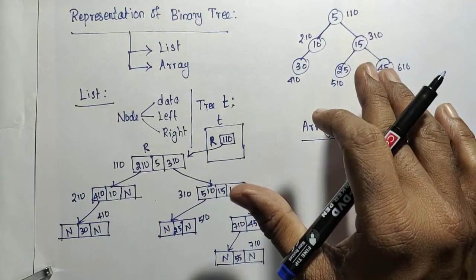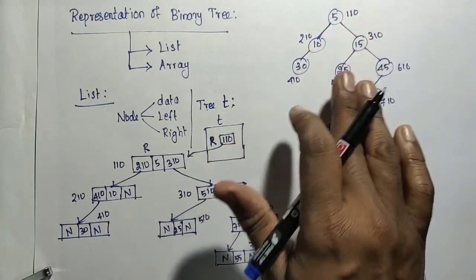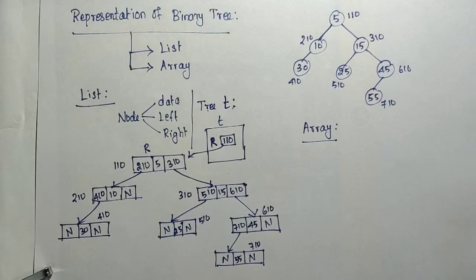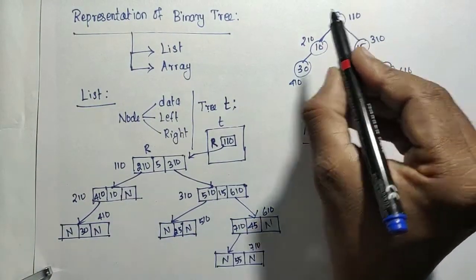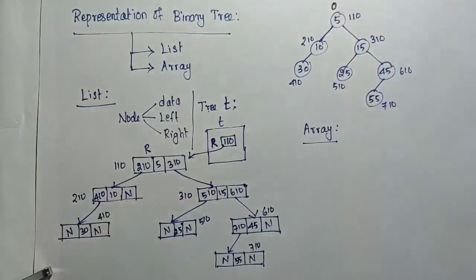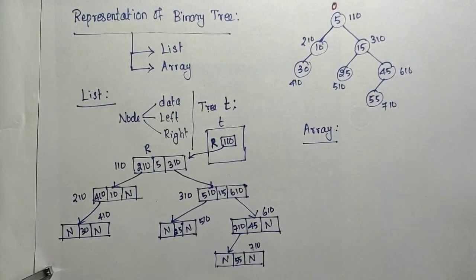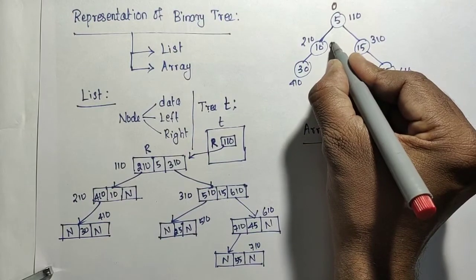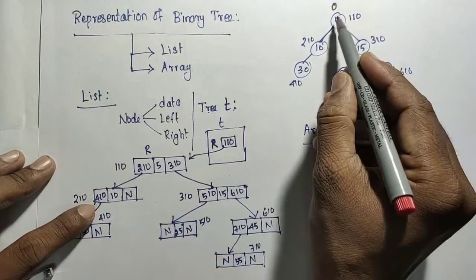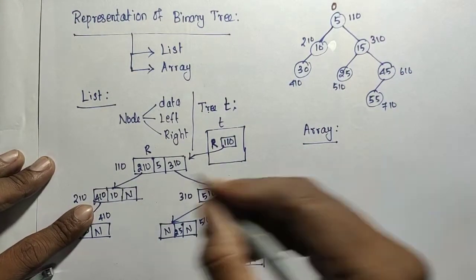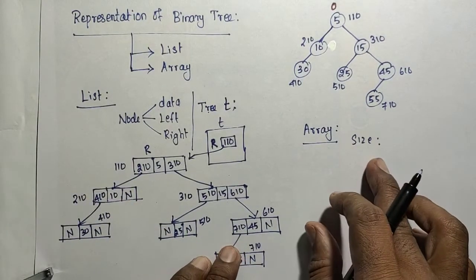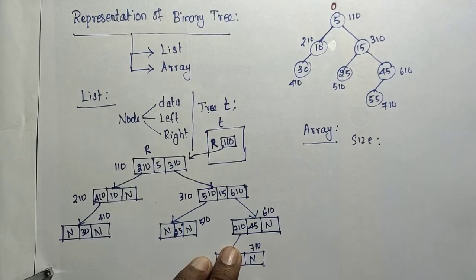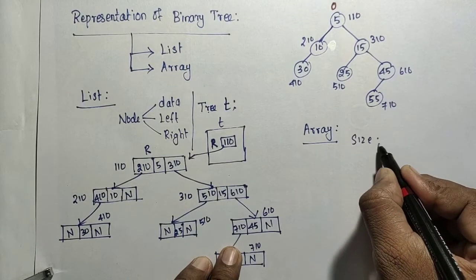First, draw the tree. The data is presented like this, and this data is going to be stored in an array as a tree. Name the root node as index zero. The size of the array depends on the height of the tree. The height is equal to 3, or the number of levels: 0, 1, 2, 3. So this is the height of the tree — height equals 3.